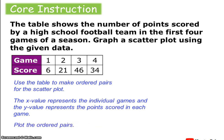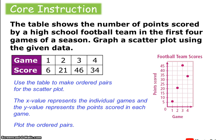Then we plot the ordered pairs. Here's my coordinate plane with points plotted. It looks like the team is doing fairly well — they increased their point total from the first to the third game, with slightly fewer points in the fourth game. Maybe that was a better defensive team.